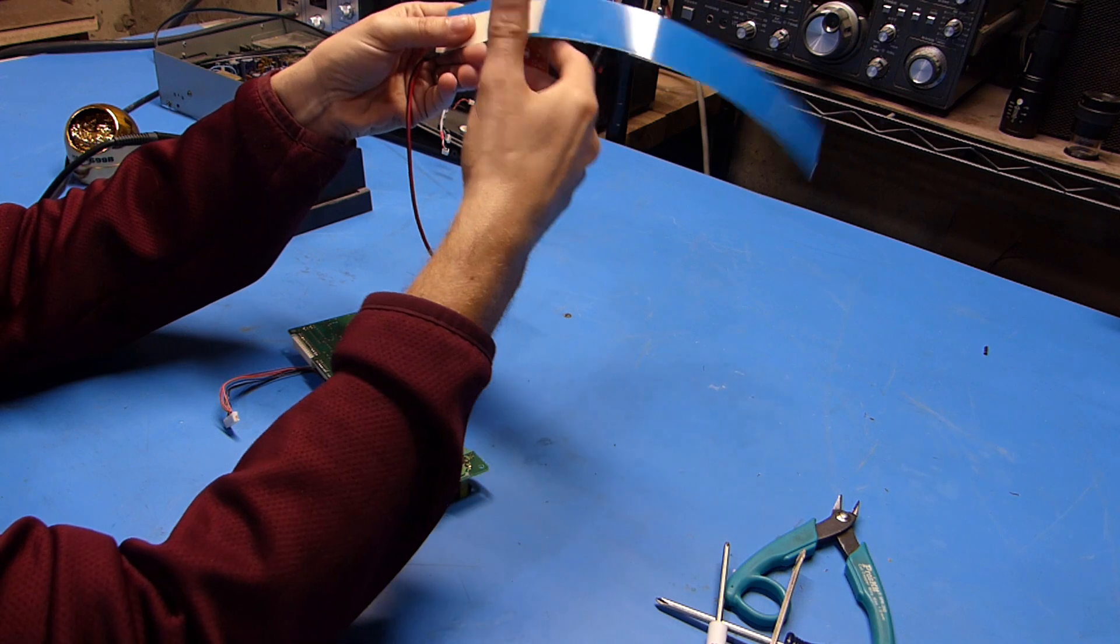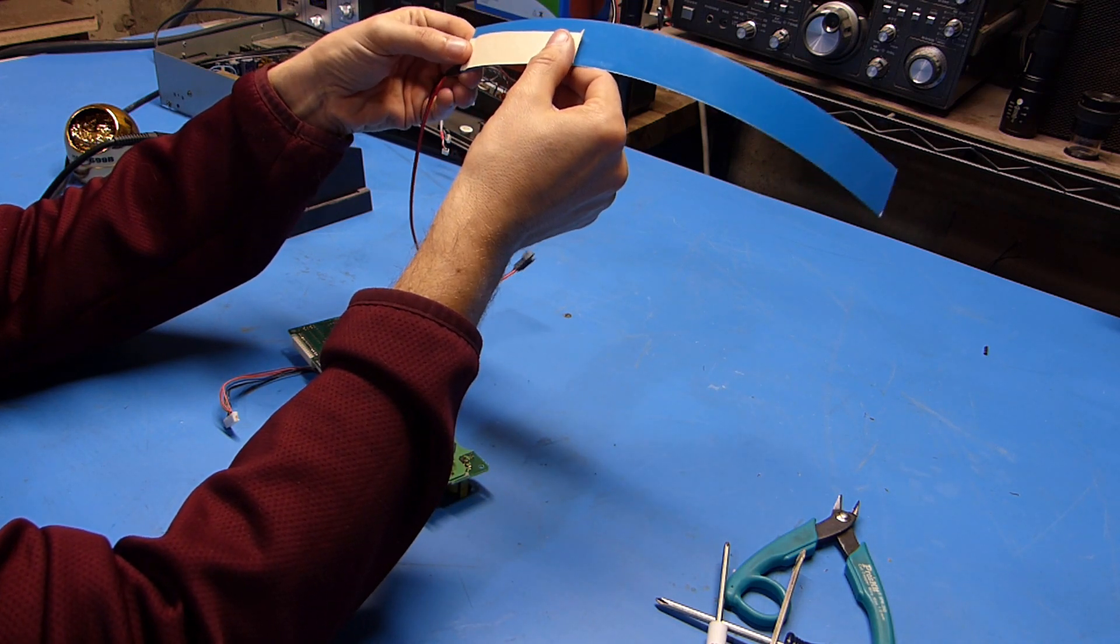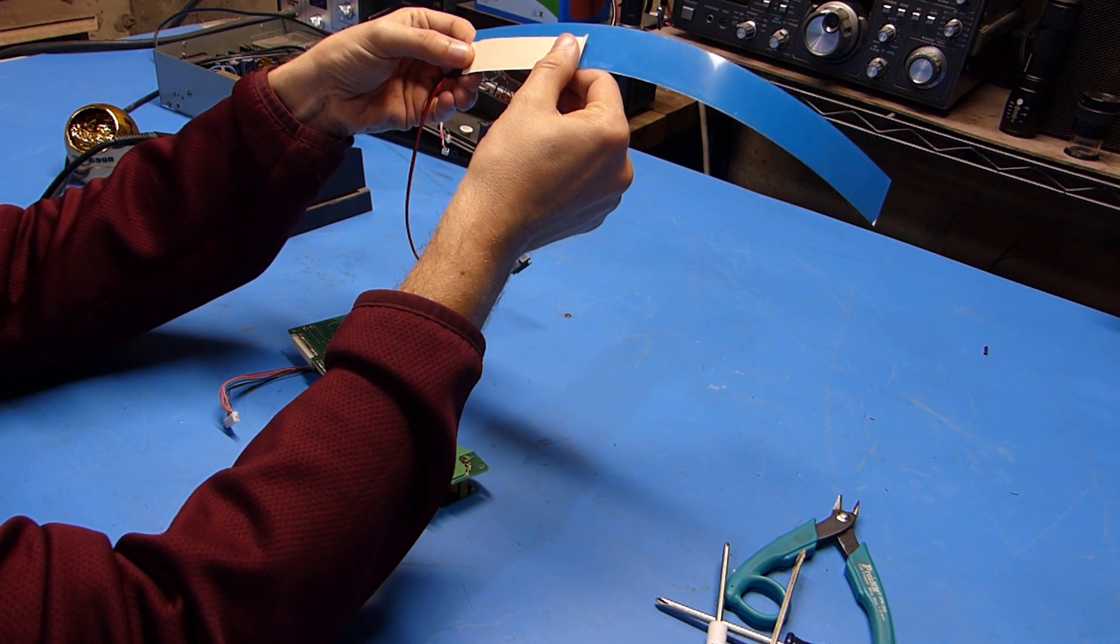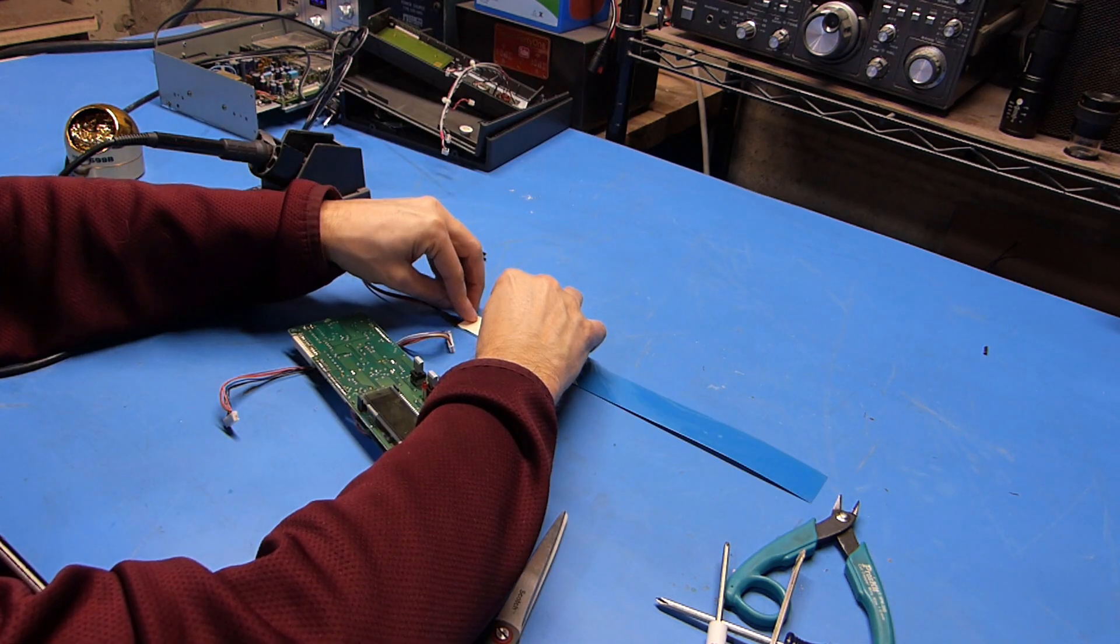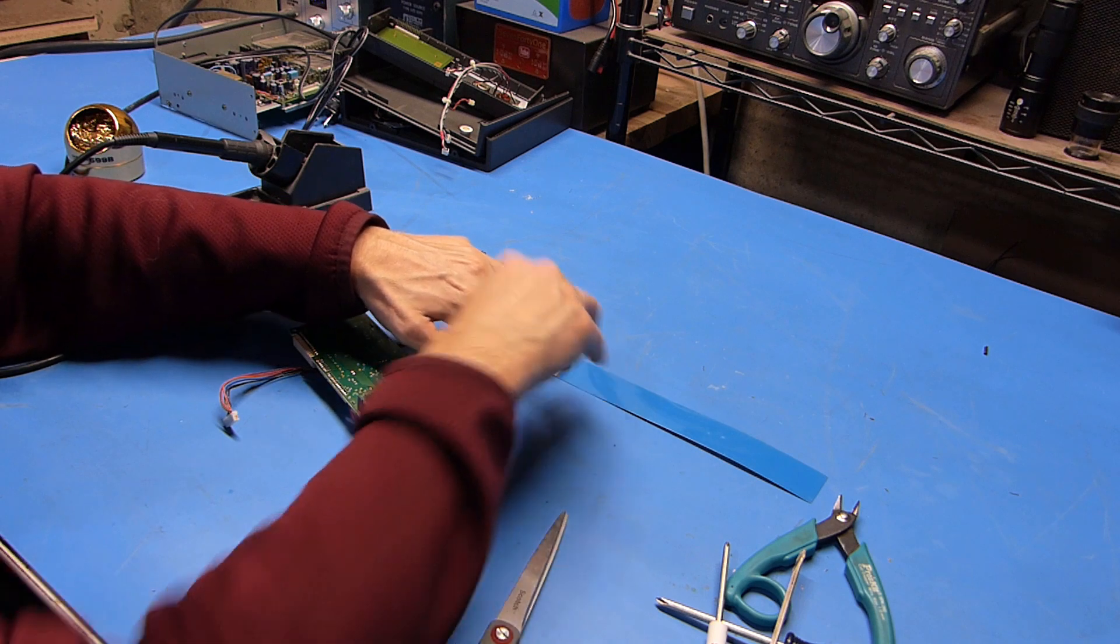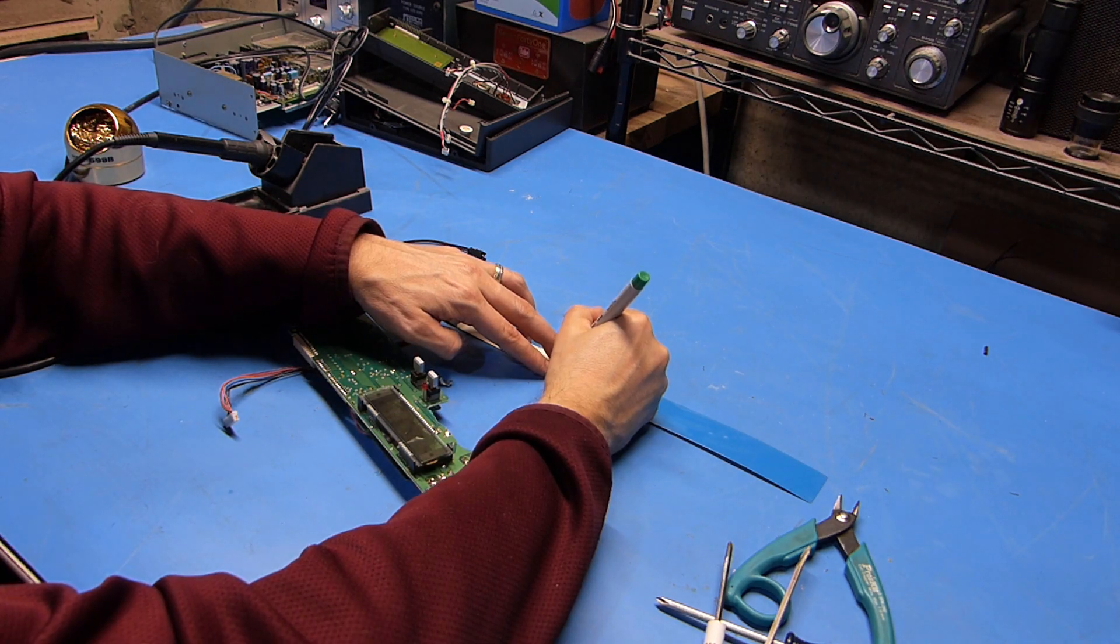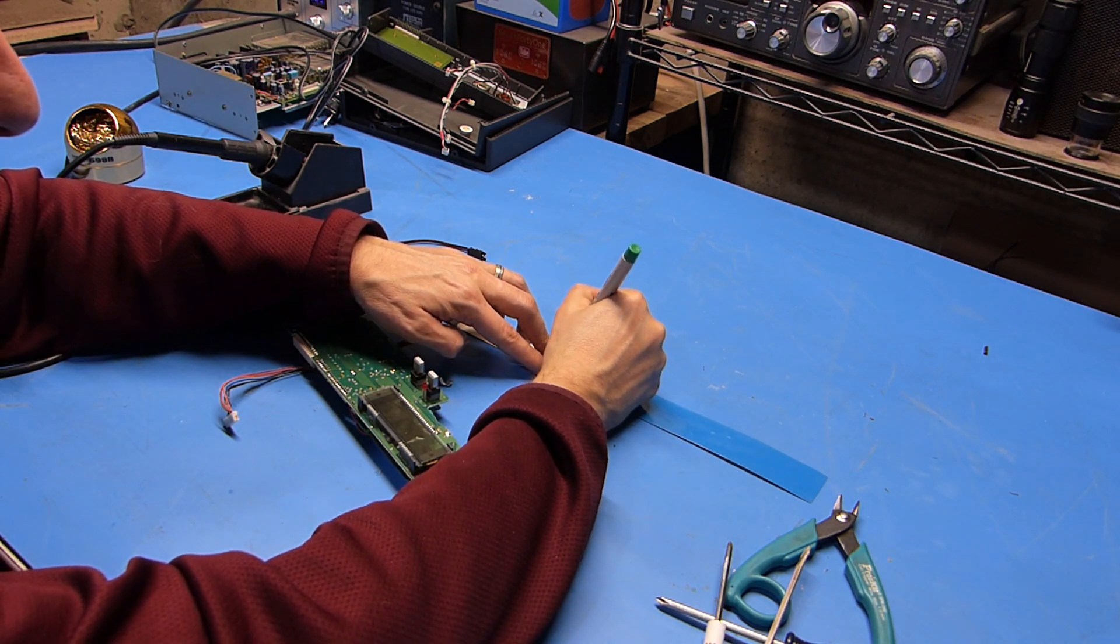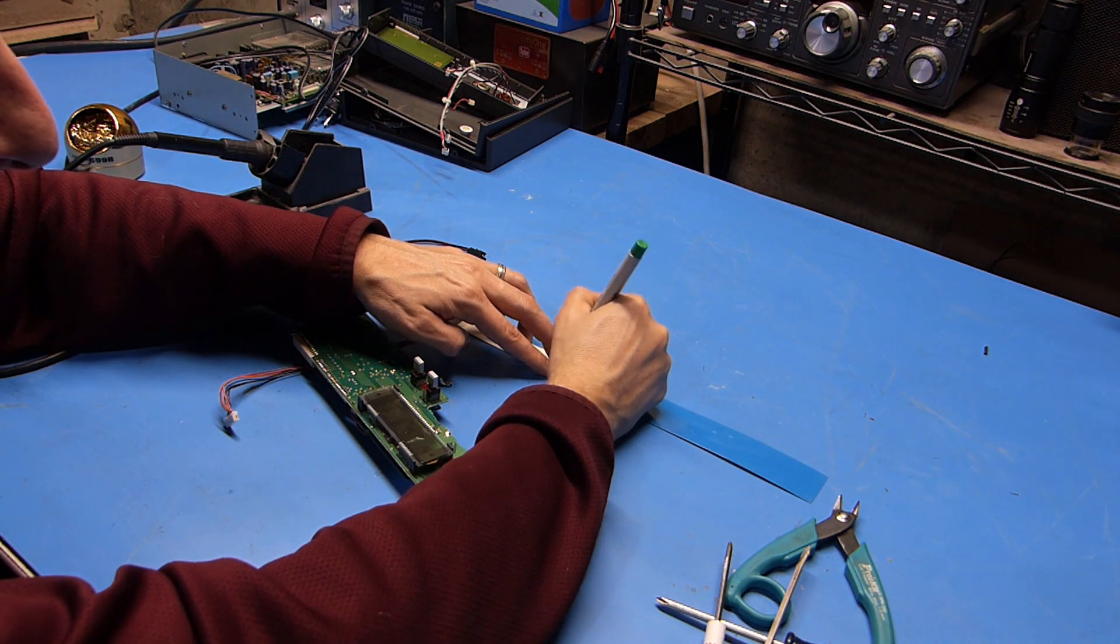So I'm going to use a fairly sharp pair of scissors and try and cut it with those. Now I'm going to cut this a little bit long to start. I can always trim it back if I need to. So I'll just use this marker to kind of mark the corner as to where I want to cut.